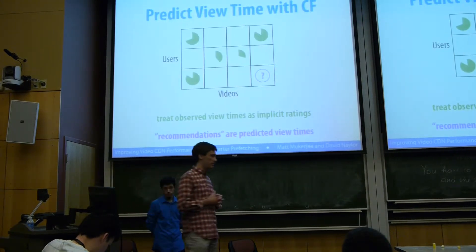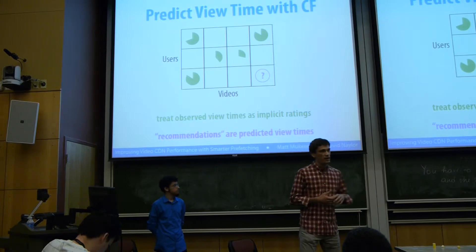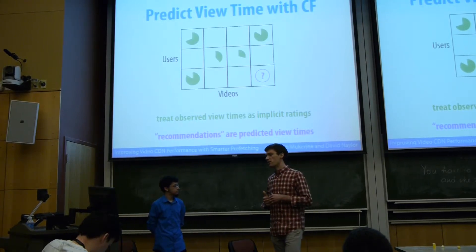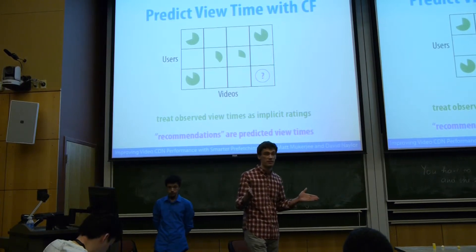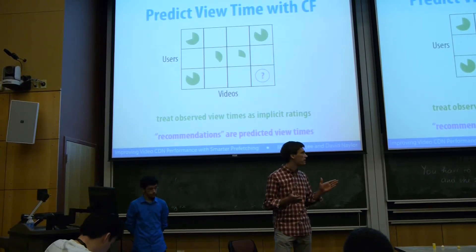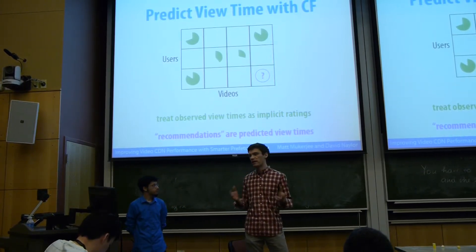What we did is we built a collaborative filtering system to give us these predictions. We have a history of videos users have watched in the past, and we know how much of those videos they watched. You can think of these view times as implicit ratings.